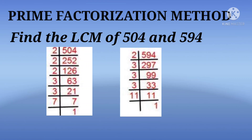After finding the prime factors, we collect the largest number of occurrences of each prime factor. The prime factor 2 appears 3 times and the prime factor 3 also appears 3 times. So we take 2 three times and 3 three times. The numbers 7 and 11 are not common in both, but we take their product as well.